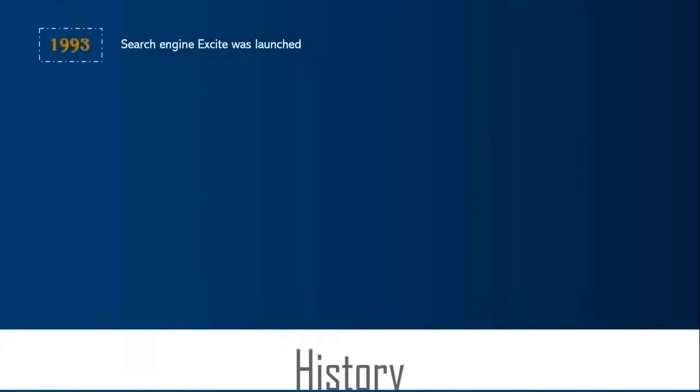Let's start with the fascinating history of search. The history of search is incomplete without touching on the history of the World Wide Web. Sir Tim Berners-Lee invented the World Wide Web in 1989. He came from Oxford University and was a software engineer at CERN, the largest particle physics laboratory near Geneva, Switzerland. Scientists had difficulty sharing information, so by October 1990, Tim had written three fundamental technologies: HTML, URI (now URL), and HTTP.